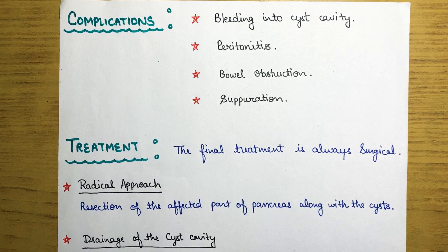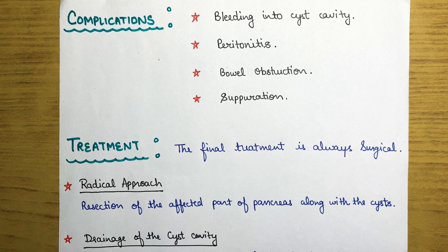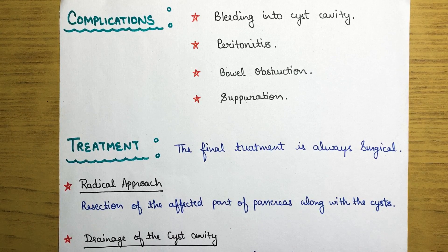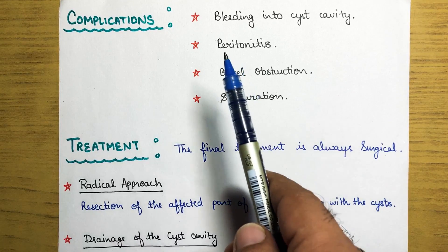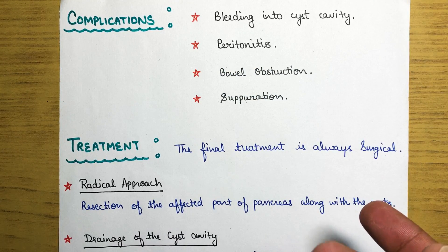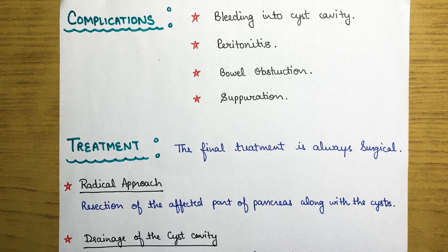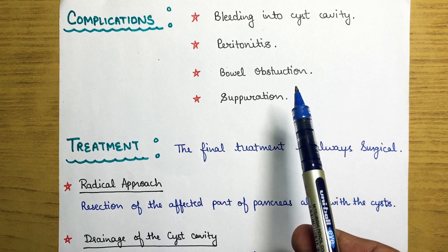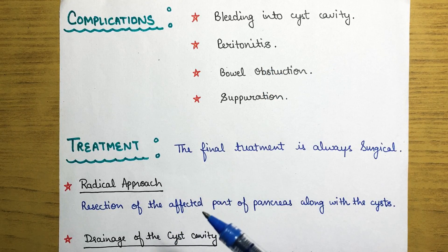The most common complications of pancreatic cysts are: bleeding into the cyst cavity — if the cyst erodes a blood vessel, it can cause significant blood loss; peritonitis — if the cyst bursts into the peritoneal cavity since the contents are not sterile; and bowel obstruction — if the cyst presses on the small bowel.